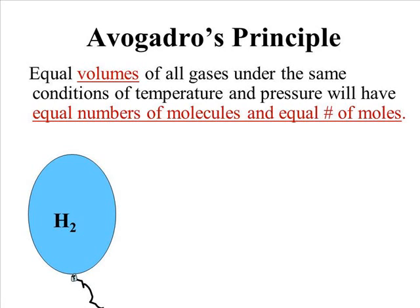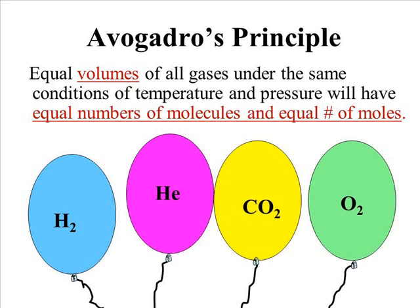That would mean any gas under the same conditions. So if we had a room full of balloons—hydrogen, helium, carbon dioxide, and oxygen—and they all had the same volume under the same conditions, we would know that we would have the same number of molecules of those gases in each of the balloons.